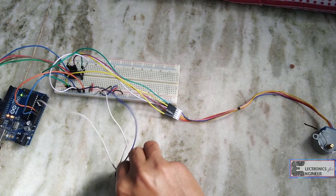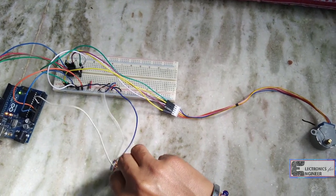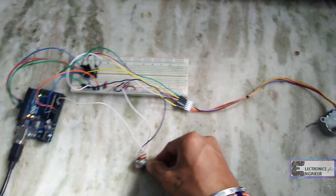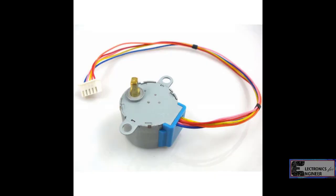If you turn the potentiometer clockwise, then the stepper motor will rotate clockwise, and if you turn the potentiometer anti-clockwise, then the stepper motor will also rotate anti-clockwise.